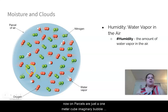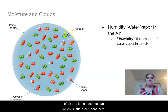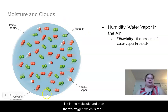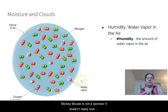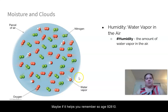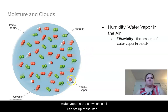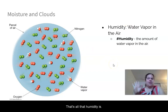From now on, we'll talk about parcels — a one-meter-cube imaginary bubble of air. It includes nitrogen (N2, the green peas), oxygen (the red molecules), and water vapor. Humidity is simply the amount of water vapor in the air — just counting up the water vapor molecules in the parcel.